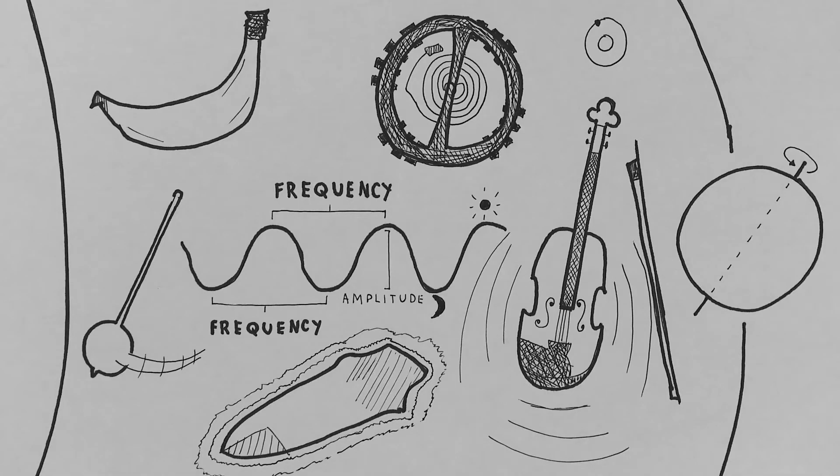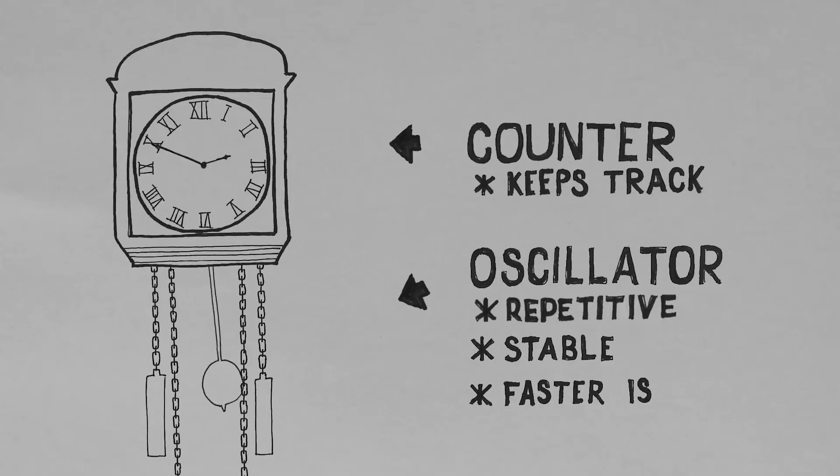Exactly what the oscillator might be, is in theory irrelevant, as long as the rate is consistent. But as we are about to find out, the faster, the more accurate.